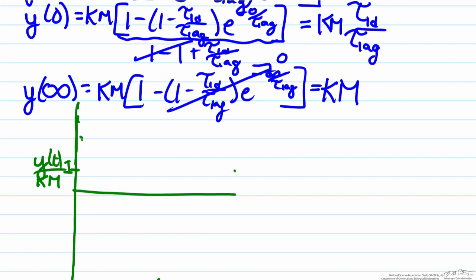There are three possibilities that exist. The first possibilities are for cases where tau lead is greater than tau lag, and what that means is the fact that our initial condition will be at some value greater than one, but then will decay in some exponential-like fashion towards the steady state value of one. So these are the cases when tau lead is greater than tau lag.